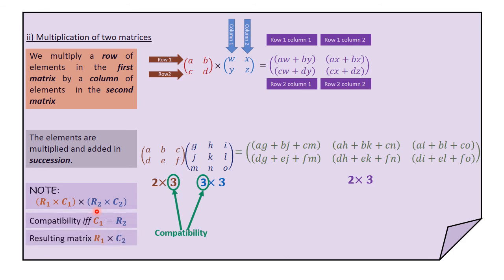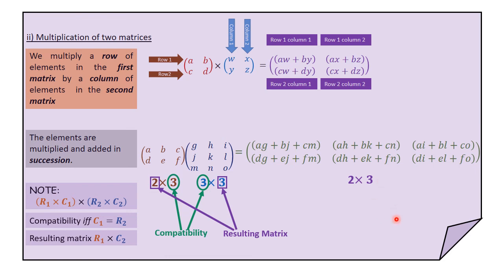The final point: when multiplying matrices of order R1 by C1 and R2 by C2, the resulting matrix will be of order R1 by C2 — the first number by the last number. The number of rows in the first matrix equals the number of rows in the resulting matrix; the number of columns in the second matrix equals the number of columns in the resulting matrix. In our last example, a 2 by 3 matrix multiplied by a 3 by 3 matrix gave a resulting matrix of order 2 by 3.